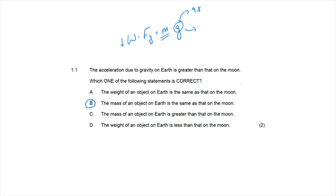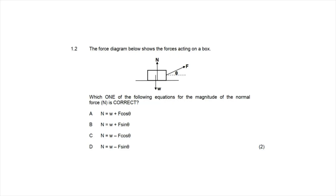Question 1.2 shows a force diagram with forces acting on a box and asks which equation for the magnitude of the normal force is correct. We can see a weight force acting downward, a normal force pushing upward, and an applied force acting at an angle. The applied force has two components, and the vertical component acts essentially with the normal force against gravity.